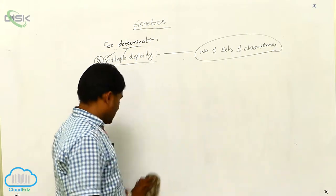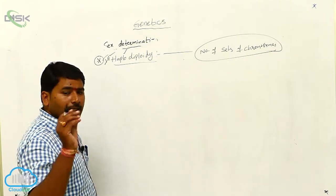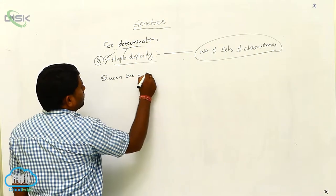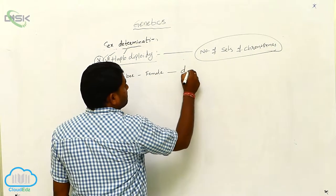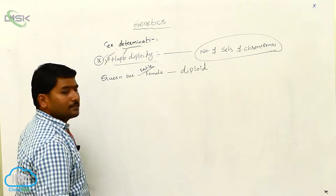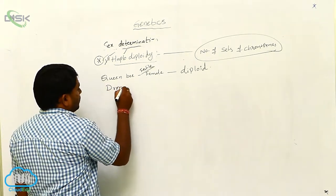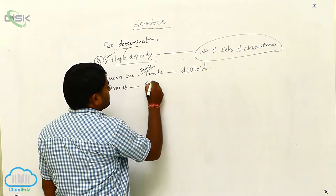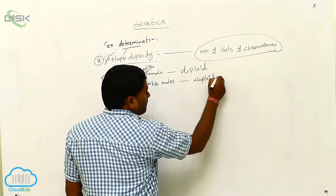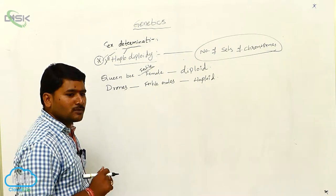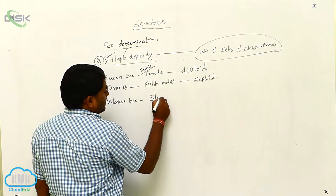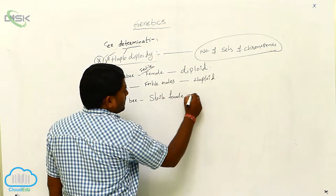Looking at the karyotype and nature of the different types of honeybees: the queen bee is a fertile female and is diploid — two sets of chromosomes are present. Drones are fertile males and are haploid, meaning only one set of chromosomes is present. Worker bees are sterile females and are also diploid.